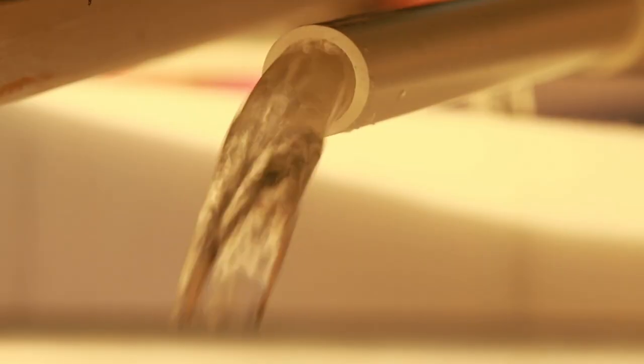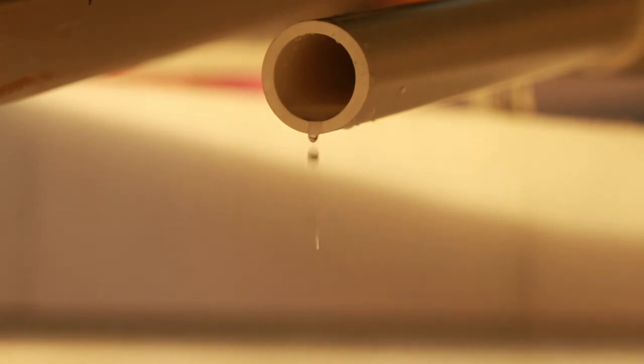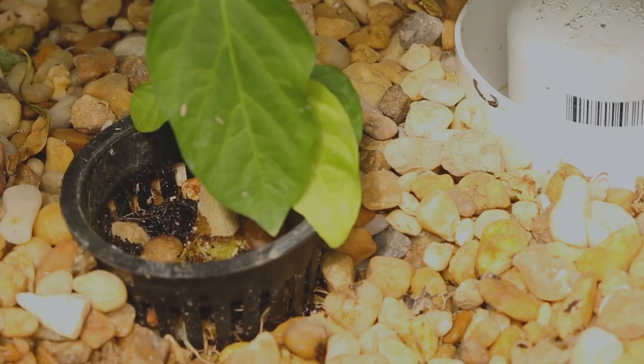In most cases, cycling all of the water through the system every hour is sufficient to maintain the water quality and provide adequate nutrients to the plants.